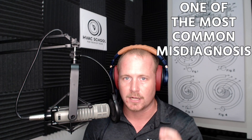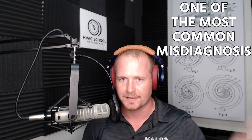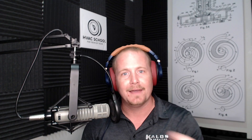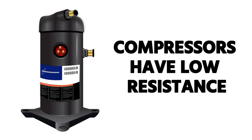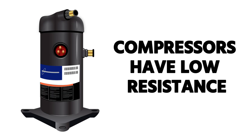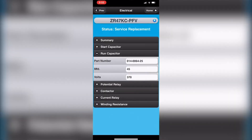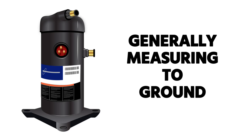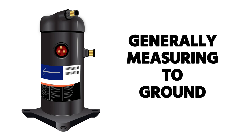And even if you have a leg-to-leg short, it's going to be shorted to ground. The reason I say this is because that's one of the most common misdiagnoses. Technicians go in and they measure with an ohmmeter between the terminals, they see a low resistance on the compressor, and they say it's bad. But compressors have a low resistance just out of the box. If you look at, for example, the Copeland mobile app, you'll see that the resistance measurement from terminal to terminal is actually quite low and it's designed to be. When you're looking for a short circuit on a compressor or a motor, generally you're going to be measuring to ground — and that's where you're going to find that short circuit.